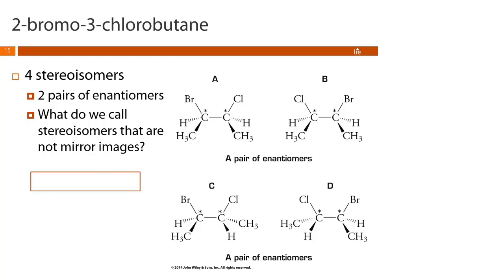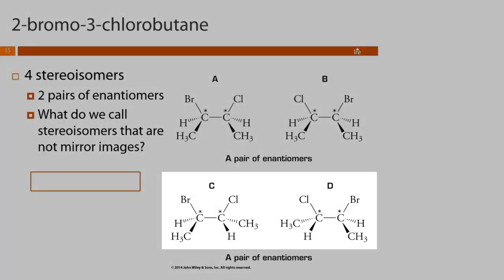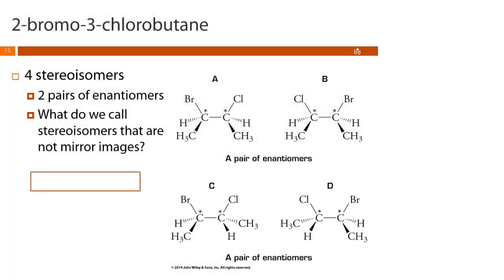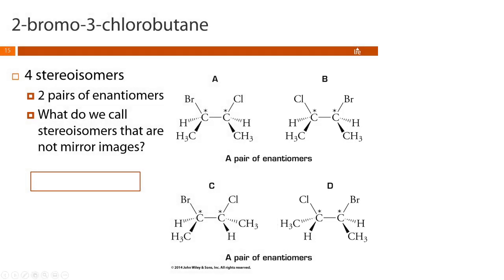Here are all four possible stereoisomers of 2-bromo-3-chlorobutane. Molecules A and B are enantiomers — non-superimposable mirror images — as are C and D. But how do we describe a pair that are stereoisomers but not mirror images, like A and C or B and D? That term is diastereomer — a pair of stereoisomers that are not mirror images of each other.